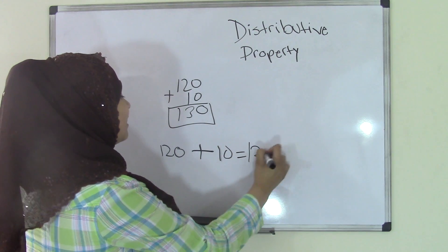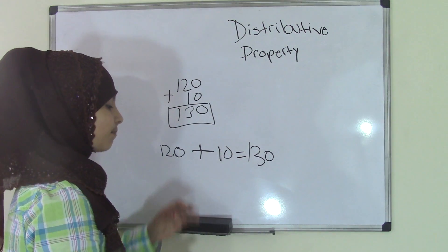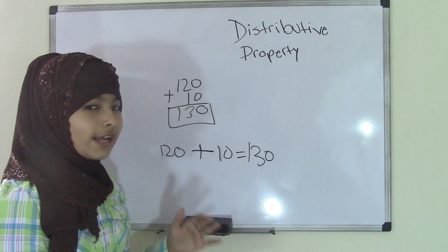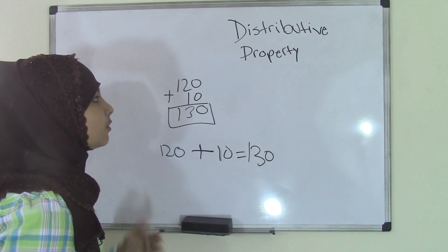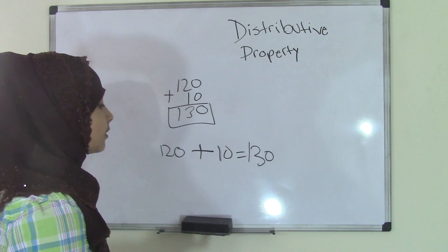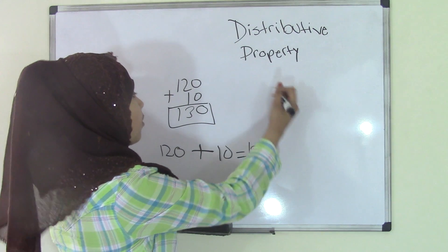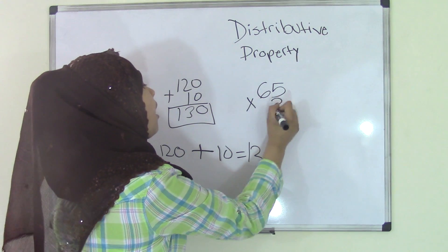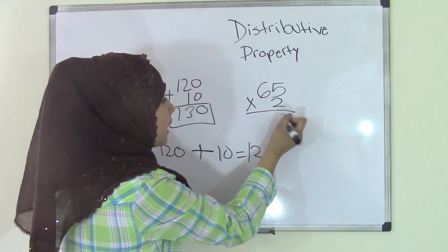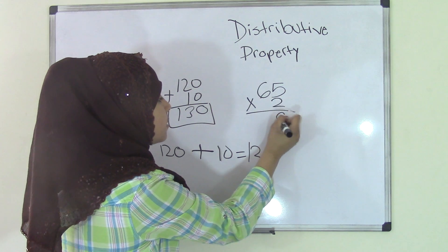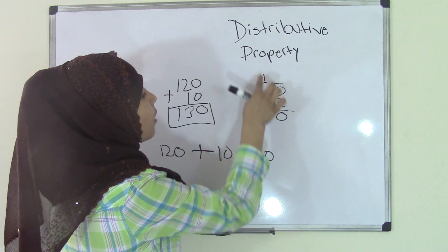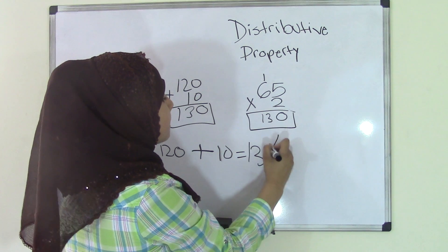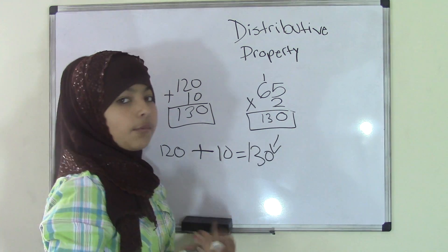So now that we have 130, if you did not already solve that in the beginning, we can always go back and try it ourselves. Our original problem was 65 times 2 — let's go ahead and check it. 5 times 2 is 10, write 0, carry 1. 6 times 2 is 12, plus 1 is 13. So the answer is 130. It matches up, and we are done.